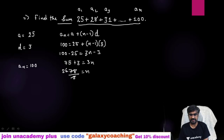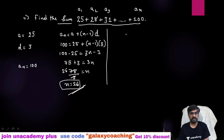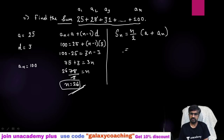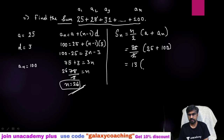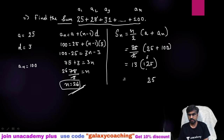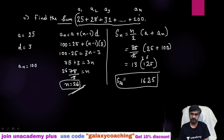So n = 26. Now that we have found n using the nth term formula, we can use the shortcut: Sn = n/2 × (a + an). Substituting: S26 = 26/2 × (25 + 100) = 13 × 125 = 1625. So 1625 will be the sum of these 26 terms of the given AP.